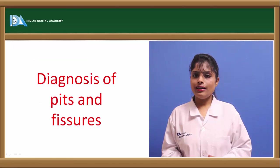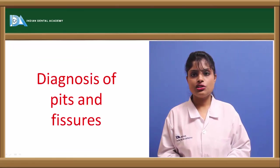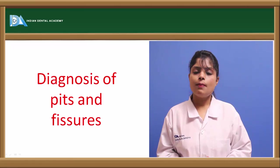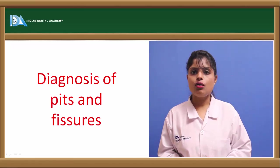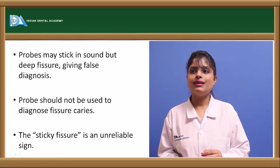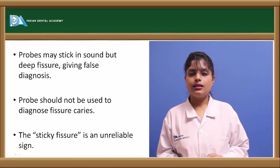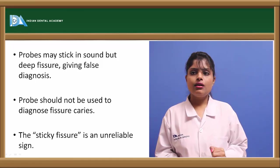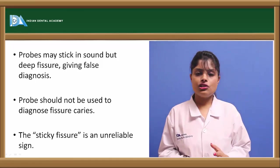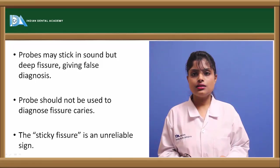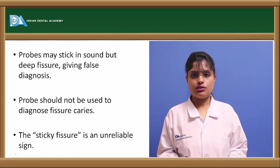So, how can we diagnose pit and fissure sealants in the mouth? They can be diagnosed by the use of an explorer or probe. If the probe sticks to sound but deep fissures, this can be a false positive sign. Generally, a sticky fissure is an unreliable sign, but wedging of the probe can be considered as a sign for diagnosis.